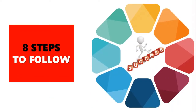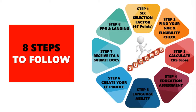To obtain a successful PR for Canada, you must follow these eight steps in the same order. First, calculate your points according to the six selection factors, in which you must score 67 out of 100. Then find your NOC and check which stream of Express Entry you are eligible for. After that, calculate your CRS score. Depending on your CRS score, you can choose between step 4 and step 5. If your score is around 450 or you think you can get a PNP, proceed to education assessment; otherwise use a language ability test to boost your CRS score first, then go for education assessment.